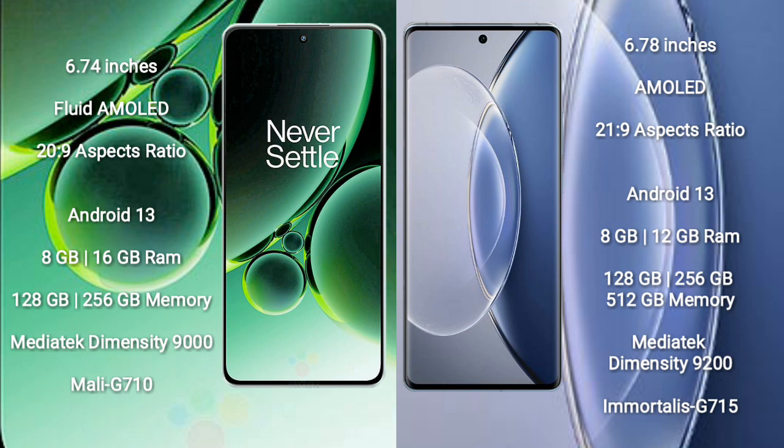Vivo X90 comes with 8GB or 12GB RAM and 128GB, 256GB, or 512GB internal storage. It is powered by the MediaTek Dimensity 9200 processor with GPU Mali-G750.